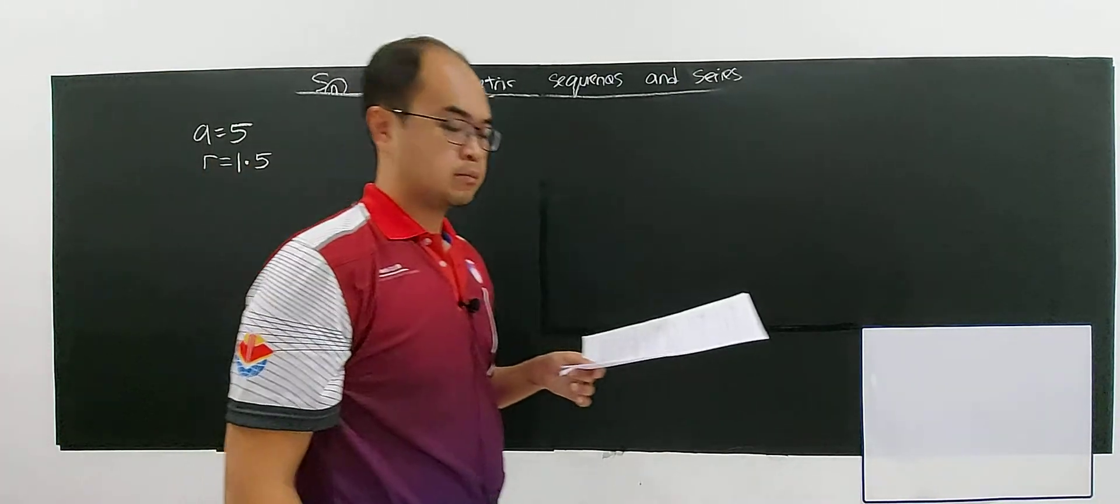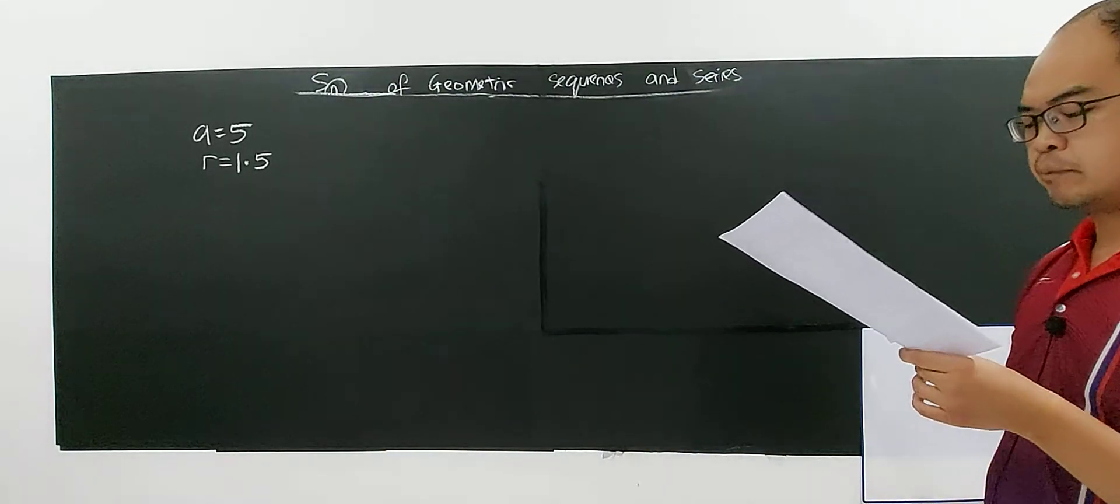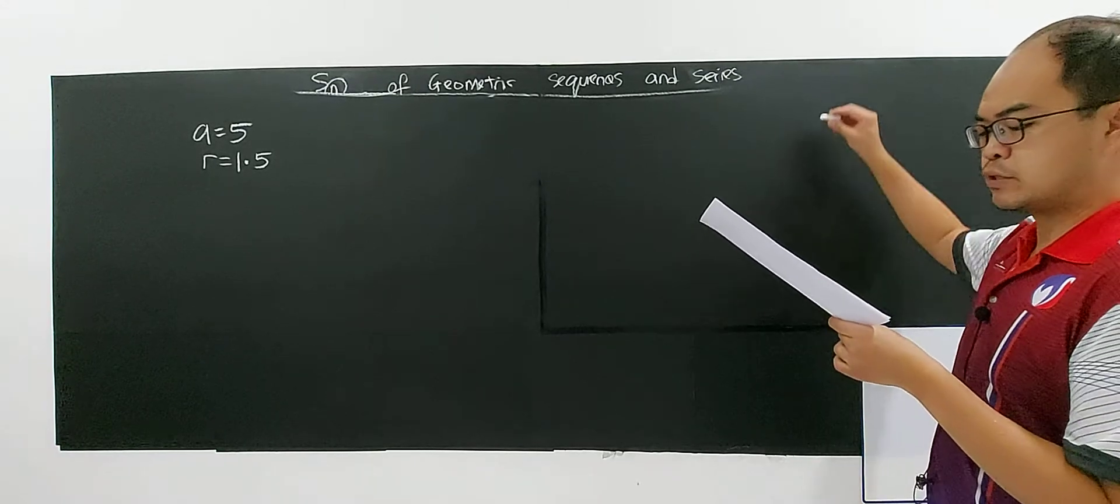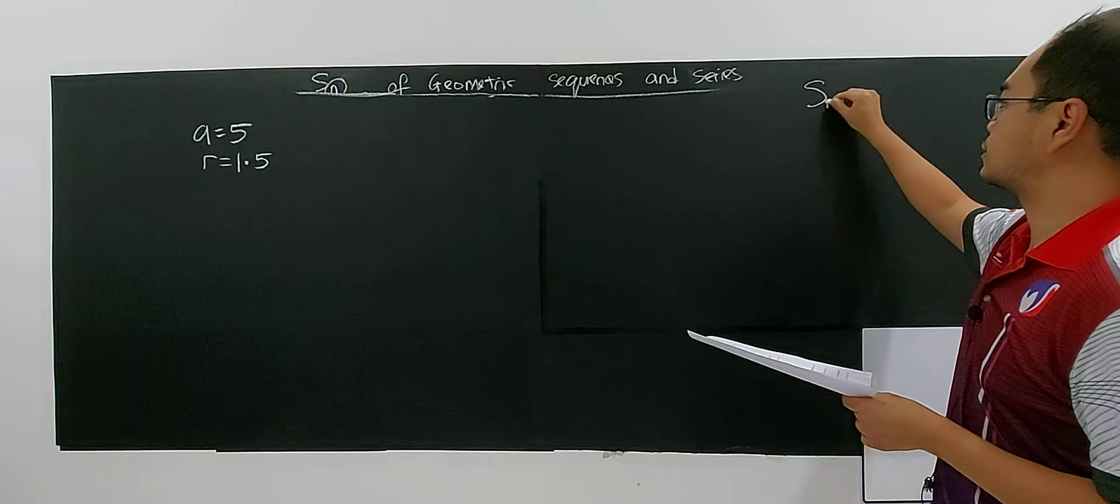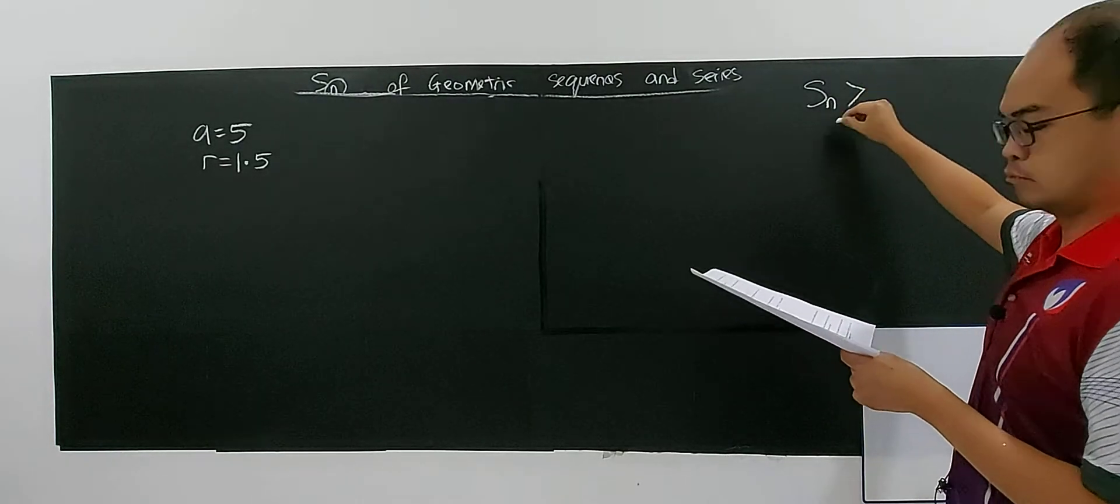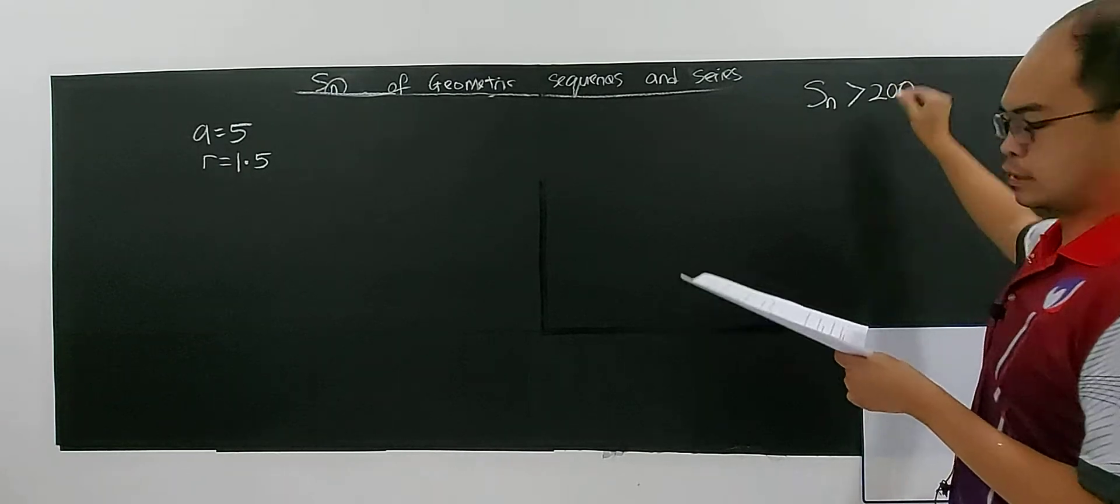The question here, the most important thing is, do you understand the question? The question said that define the number of terms needed such that the sum of the series exceeds, exceed means more than, no equal because they said exceed must be more than 200.